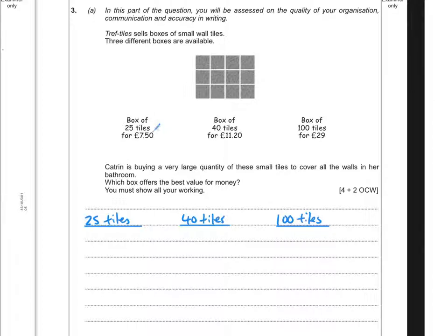So for 25, I'm going to times that by 8. We're going to times 40 tiles by 5 to be 200, and 100 tiles we're going to double to get us the price for 200 tiles.